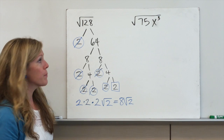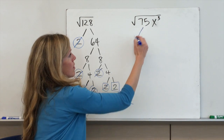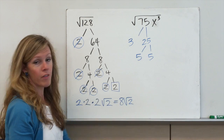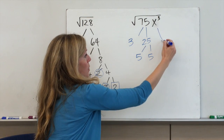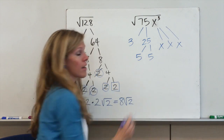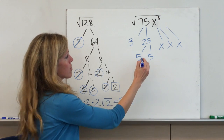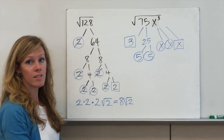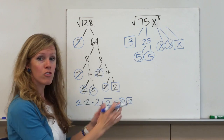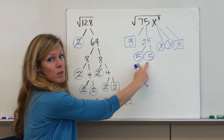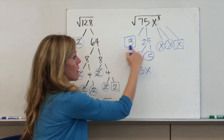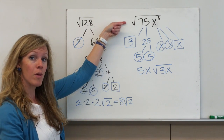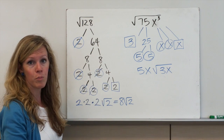Pause the video if you need to and write down the second example. Let's think of our factor tree for 75: we could do 3 and 25, and then 25 is 5 times 5. There are no more factors of 3 and 5, so we're done. For x to the 3rd, let's think about that as x times x times x, because x times x times x is x to the 3rd. Let's find our pairs: here's a pair of 5s, the 3 by itself, and a pair of x's with one x left over. The boxes tell me what stays under the radical symbol and the circles show me pairs I can factor out. Radical 5 times radical 5 is 5, radical x times radical x is x, and then I've got radical 3x. So 5x radical 3x is the simplest form of radical 75x³.